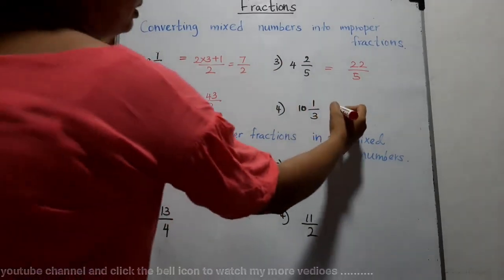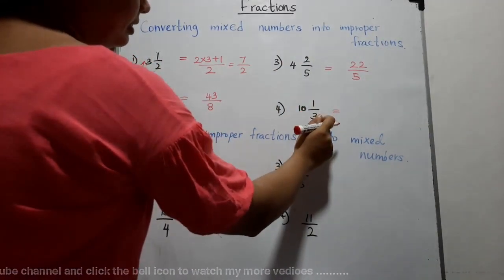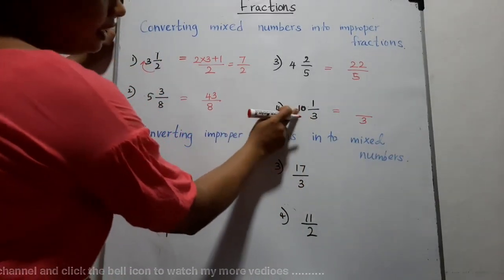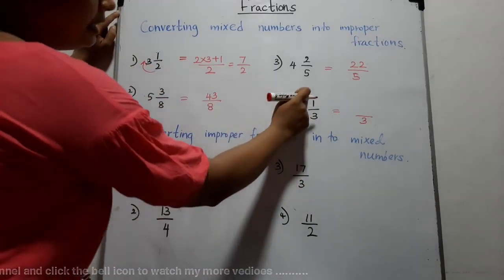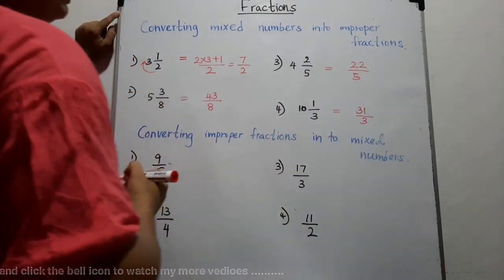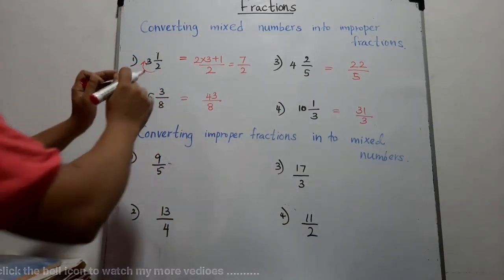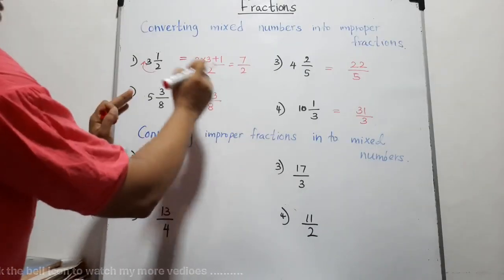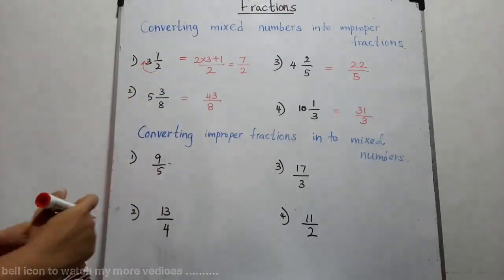Next: ten and one-third. Denominator is three. Three into ten is thirty. Thirty add one is thirty-one. The answer is thirty-one thirds. This is the method of converting mixed numbers into improper fractions.